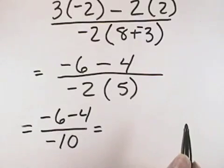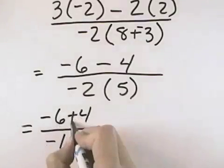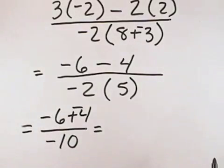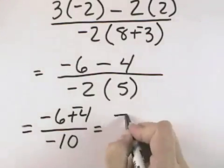Now moving on, if we continue with the numerator, negative 6 minus 4 could be made plus a negative 4. Negative 6 plus negative 4, they're both negative, so we add them together to get negative 10.